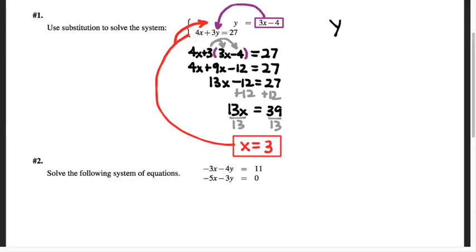If I do that, then my first equation, y equals 3x minus 4, is going to now look like y equals 3 times 3 minus 4. That's nice, because it only gives me arithmetic to do, and leads me to y equals 5.